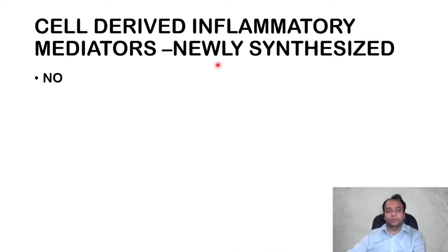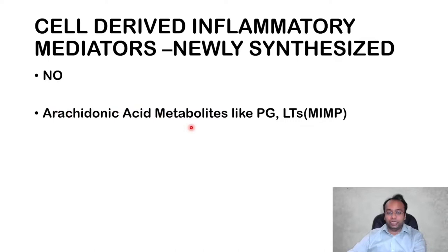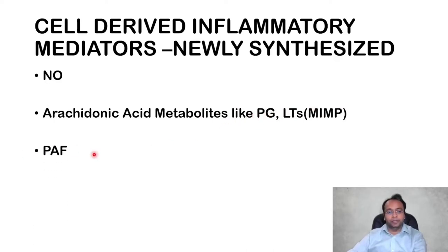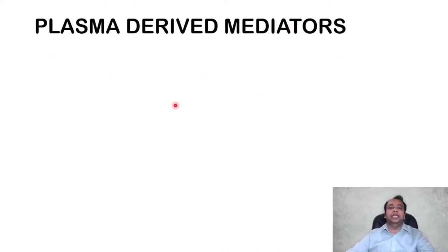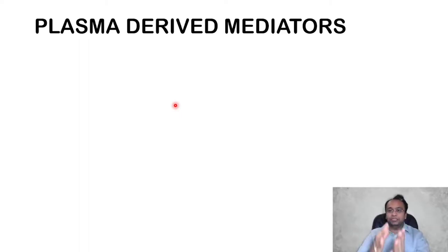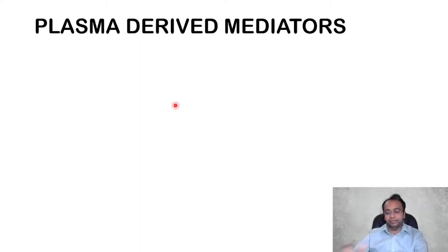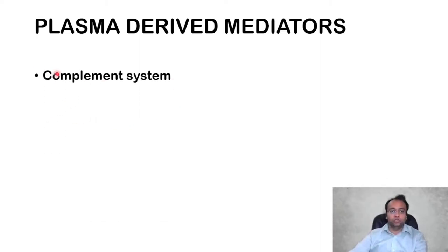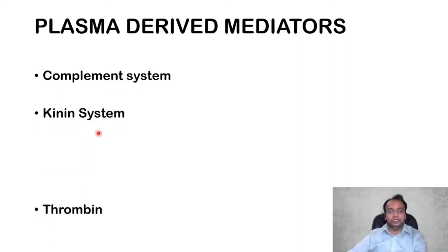Cell-derived inflammatory mediators that are newly synthesized during acute inflammation include nitric oxide, arachidonic acid metabolites such as prostaglandins and leukotrienes, platelet activating factor, and cytokines. These are the newly synthesized cell-derived inflammatory mediators. Plasma-derived mediators are present in plasma in inactivated form and need to be activated during inflammation. There are three plasma-derived mediators: complement system, kinin system, and the coagulation system — particularly thrombin.